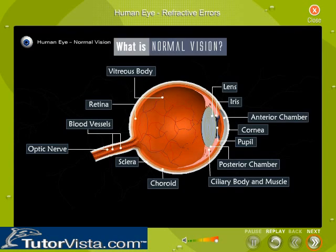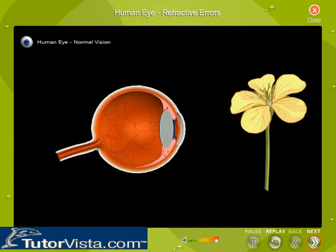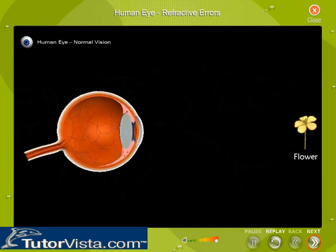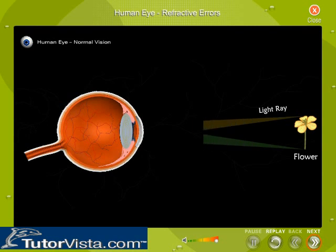What is normal vision? Let's first understand how normal vision occurs. The sequence in which the image is formed is shown here. Light from the object enters the eye through the cornea, the clear dome-shaped surface that covers the front part of the eye.